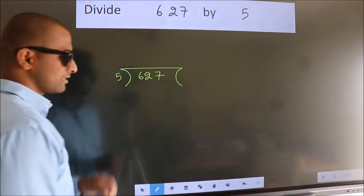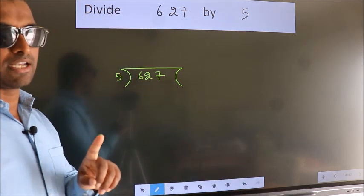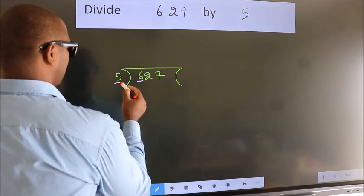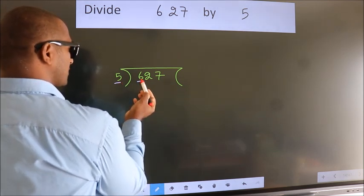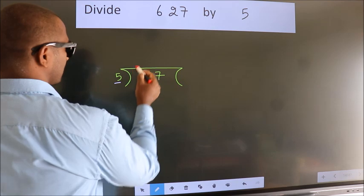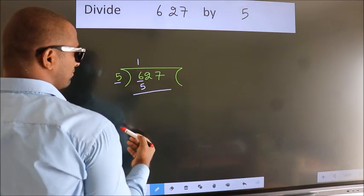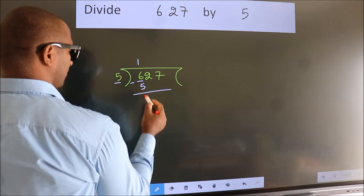This is your step 1. Next, here we have 6, here 5. A number close to 6 in 5 table is 5 once 5. Now we should subtract. We get 1.